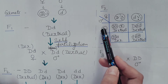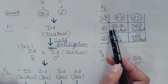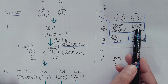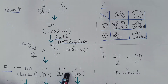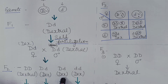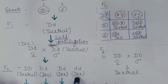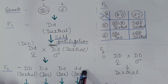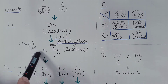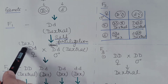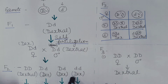The male gamete fuses with the female gamete, and all the F2 offspring are dextral. Even though some offspring carry the recessive genotype (small d, small d), which by Mendel's law should be sinistral, they are dextral — because the phenotype of the offspring does not depend upon the genotype of the offspring but on the genotype of the mother. The mother's genotype is capital D, small d, hence the shell coiling is dextral.